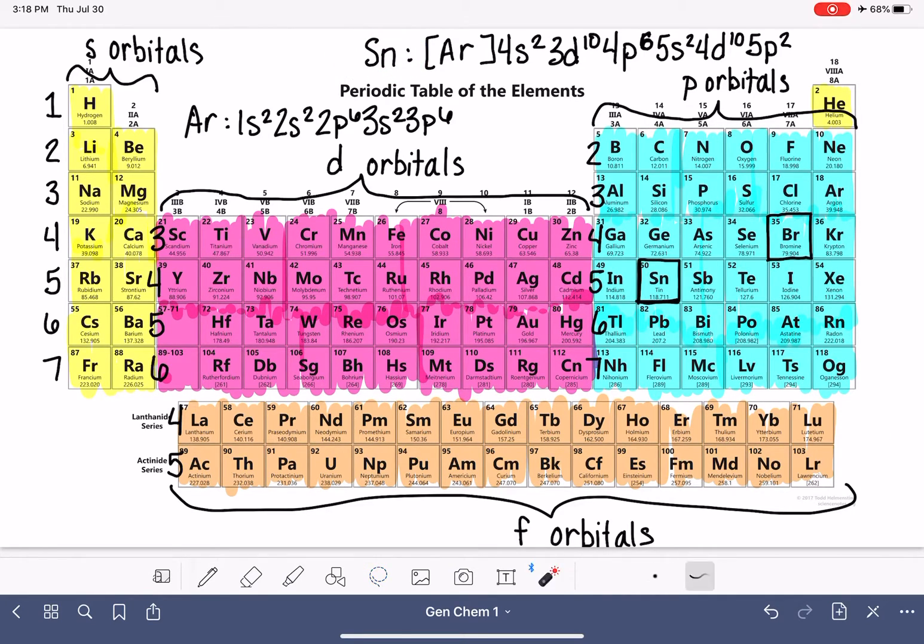For doing the electron configuration of bromine, argon would be a really logical abbreviation because argon would get us as much as we could get to a noble gas, and then we could just continue on further. So if we were wanting to write the electron configuration for bromine, the previous noble gas, argon would be a logical choice.